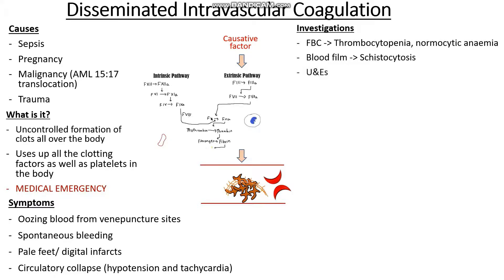We also want to monitor the impact on the kidneys, as these clots can get deposited there. DIC can lead to acute kidney injury where we may see raised urea and creatinine. Another important investigation is checking the clotting cascade by performing clotting studies.